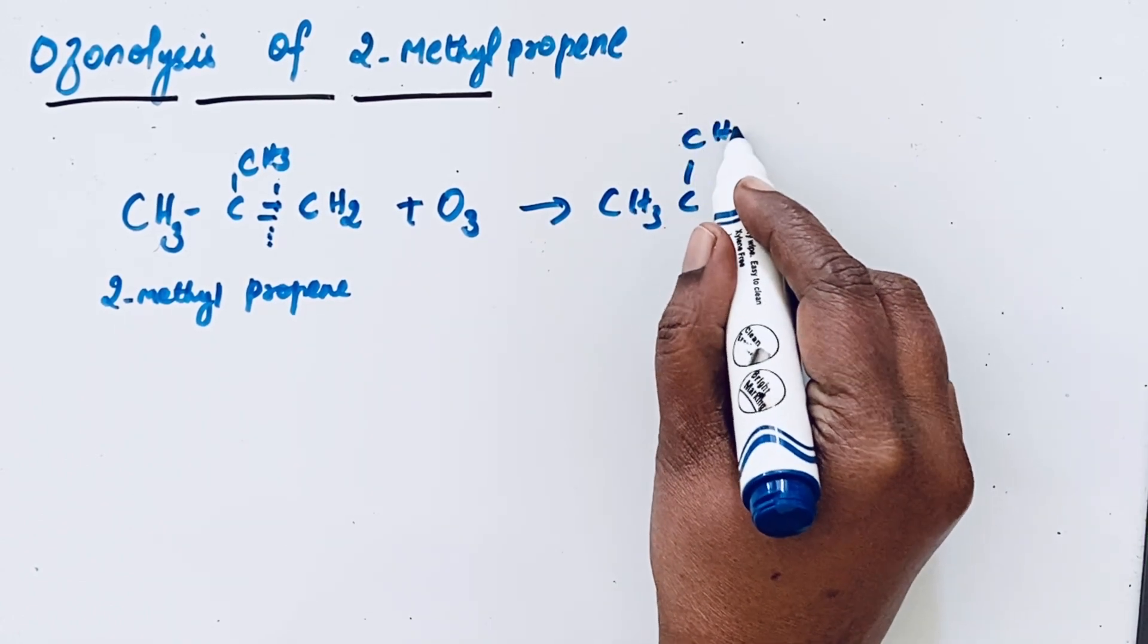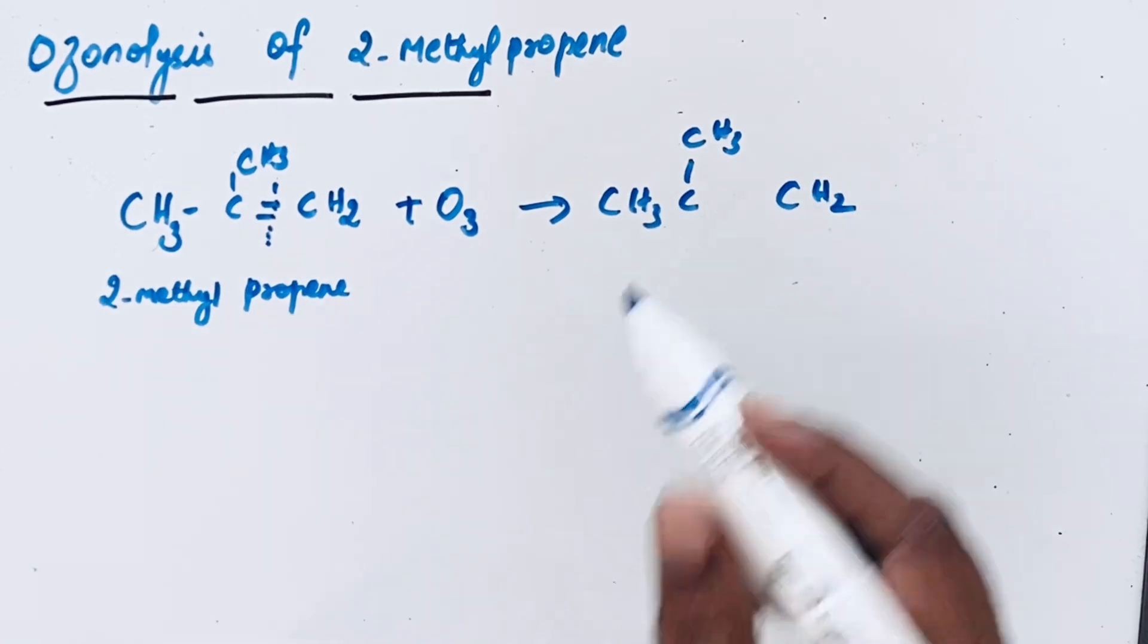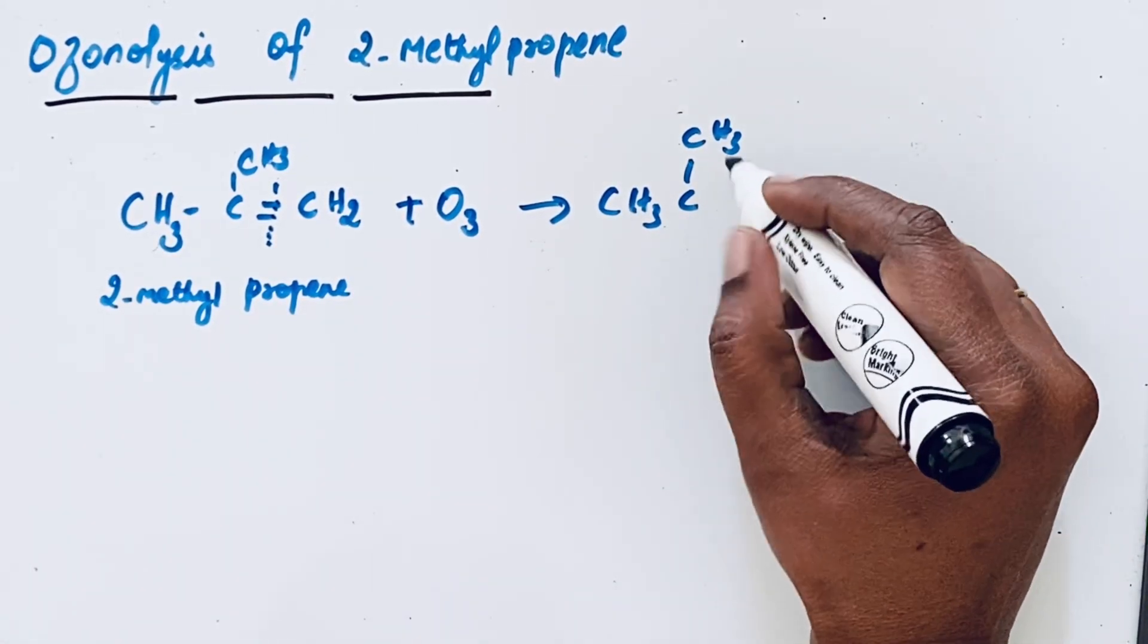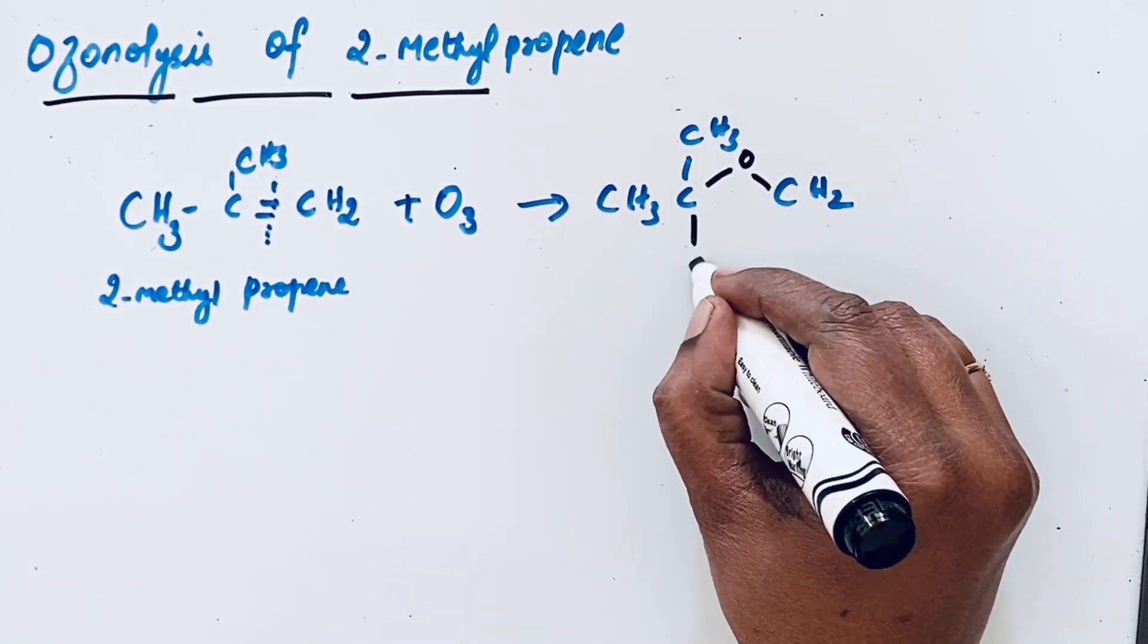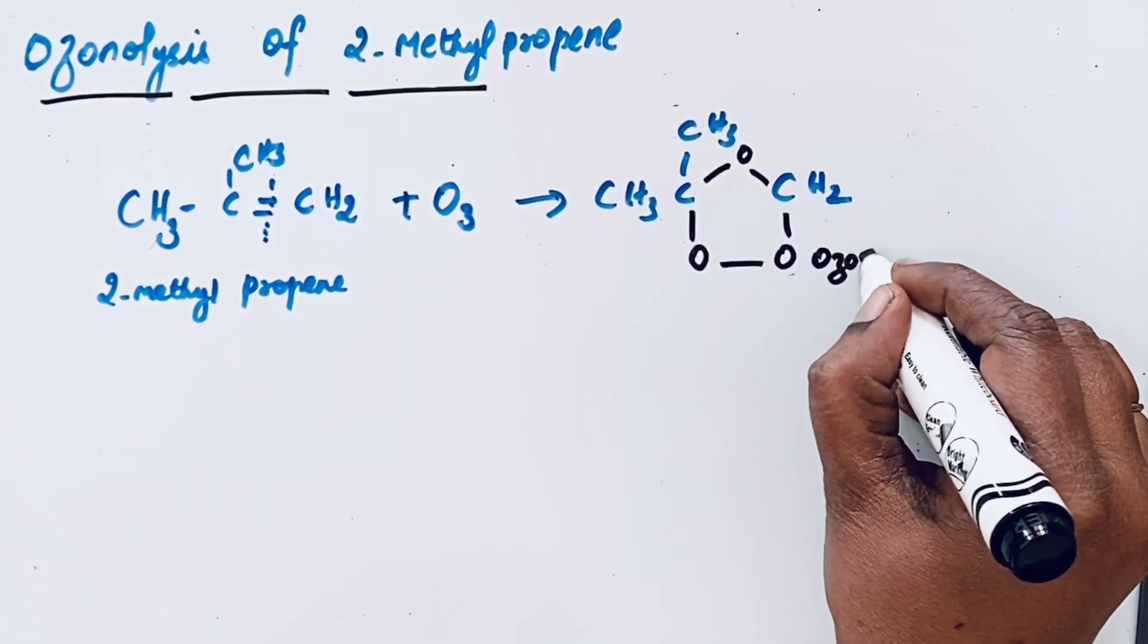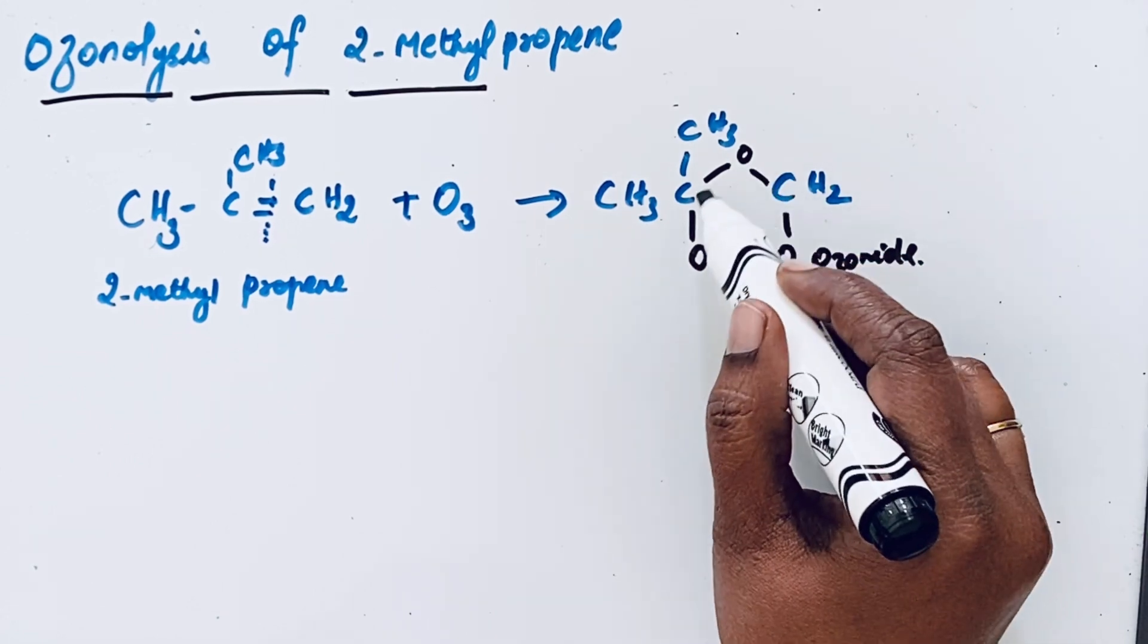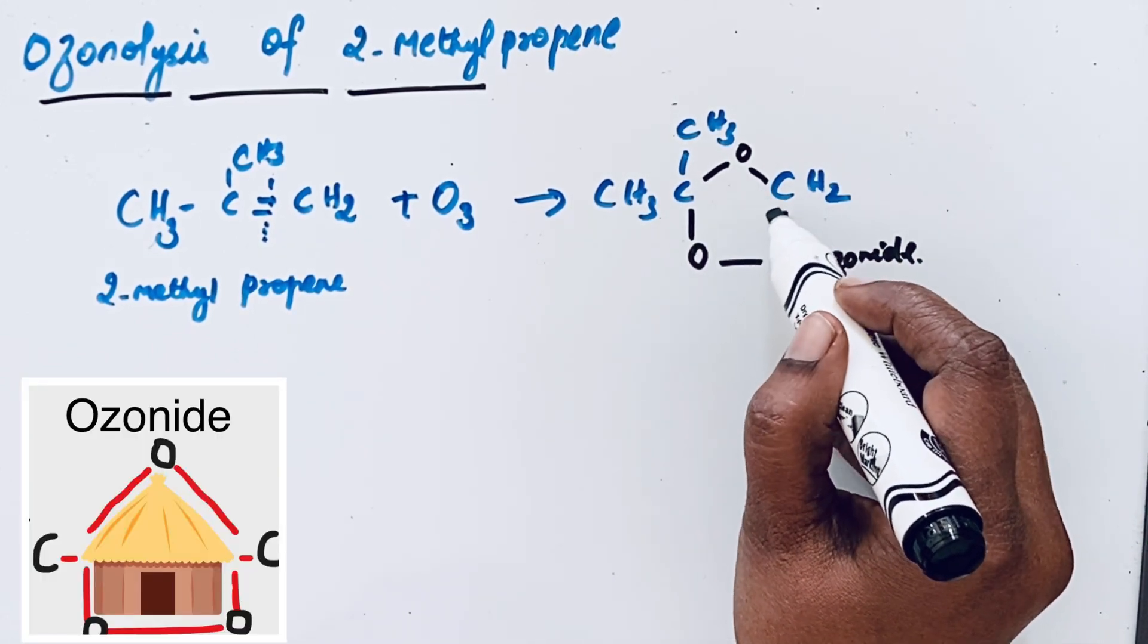C, CH3, CH2. So there is a double bond in between. So now take that oxygen here. There are 3 oxygen atoms in ozone molecule. One oxygen atom, then another oxygen atom, then another oxygen atom. So this we call as ozonide. This is an intermediate. I think this structure reminds you of your childhood memory like a small hut.